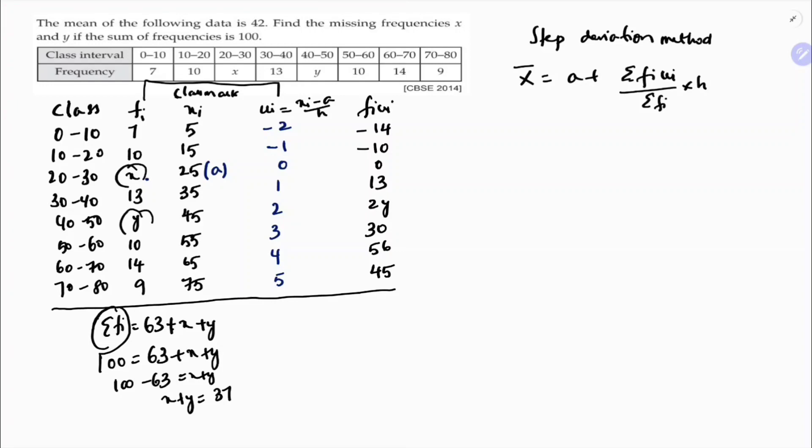So now sigma FI UI, now see here first add the negative values, minus 14 minus 10 is minus 24. Now here 45 plus 56, 101, 101 plus 30 is 131, 131 plus 13 is 144. So positive values are 144 plus 2y. So sigma FI UI, 144 minus 24 is 120 plus 2y.